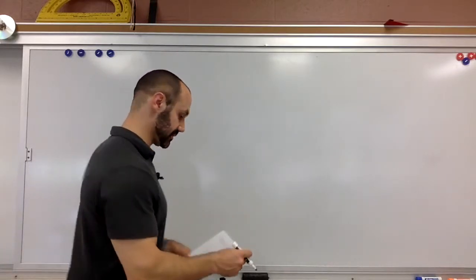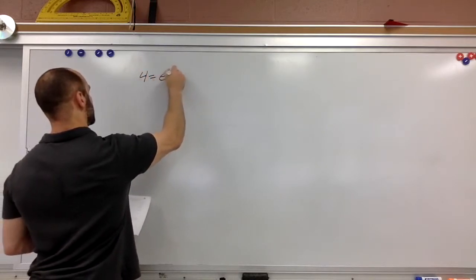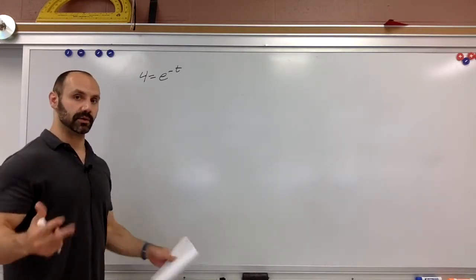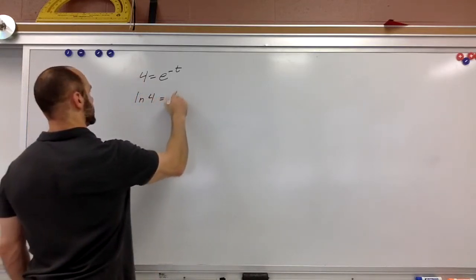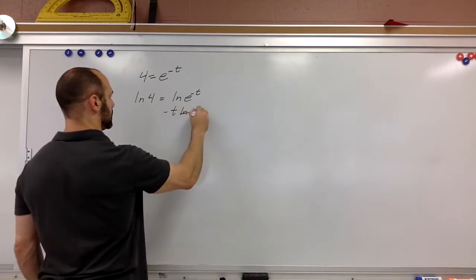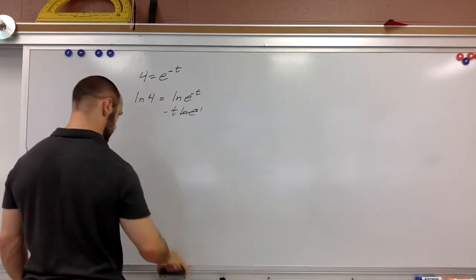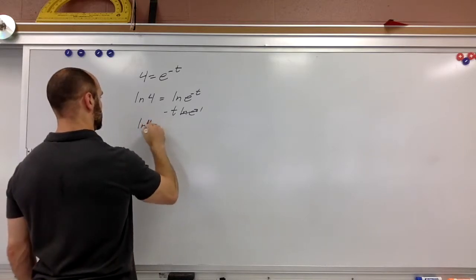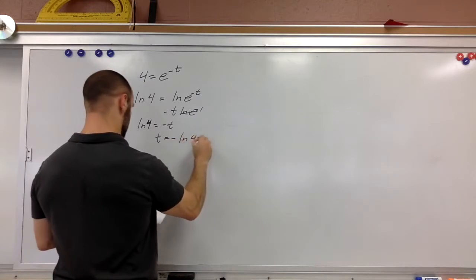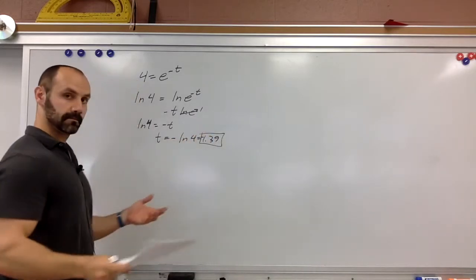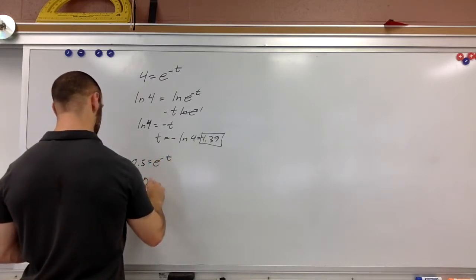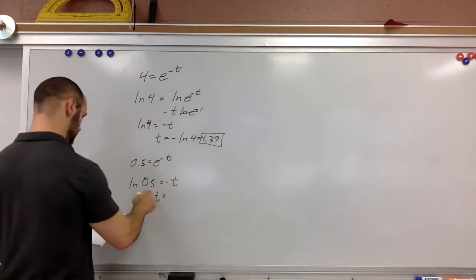We're going to be dealing with exponentials, so here's a quick review. If we have 4 equals e to the negative t, we solve for t by taking the natural log of both sides: natural log of 4 equals negative t times natural log of e. Since natural log of e is just 1, we get t equals negative natural log of 4, which is negative 1.39. Similarly, 0.5 equals e to the negative t gives natural log of 0.5 equals negative t, so t equals 0.69.